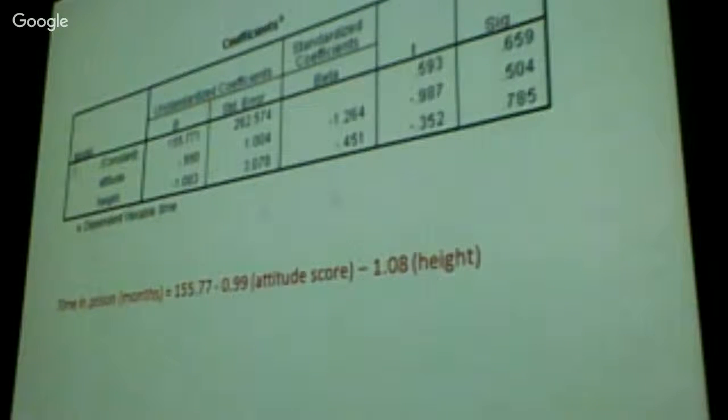And this shows the p-value for each of these contributions. But this is the equation that we get. Time in prison equals this constant minus 0.99 times your attitude minus 1 times your height. In other words, the taller you are, the less time they spend in prison. So height has a bigger influence than attitude score in a lower room of prison time. That number is bigger. It's major. Obviously, it's fake data. It's not true.